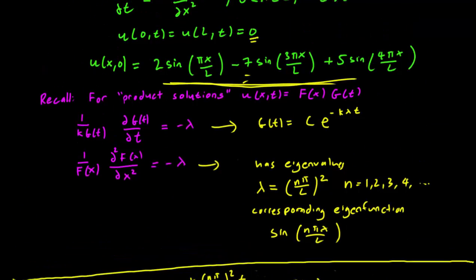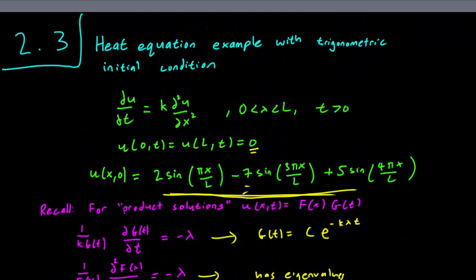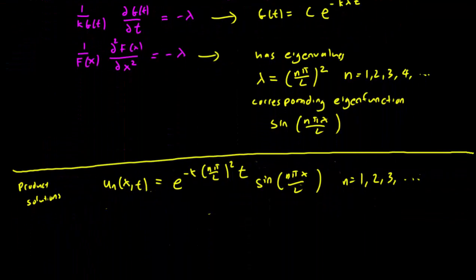Now we want to get an initial condition of the form 2sin(πx/L) - 7sin(3πx/L) + 5sin(4πx/L), but let's see what initial condition we get from these product solutions.